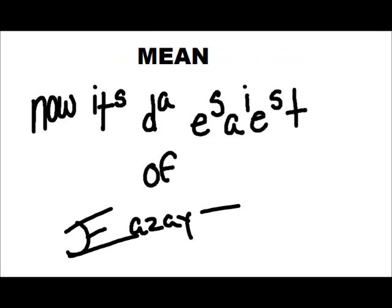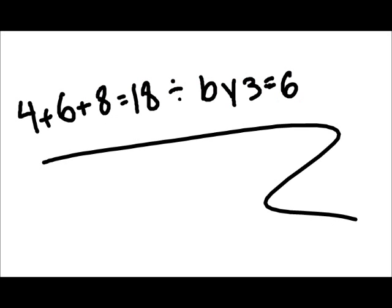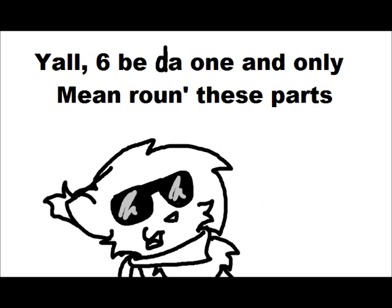Mean. Now, that's the easiest of easier. All you've got to do is find the average. Add up all your numbers and divide by your amount of numbers. 4 and 6 and 8 is 18, divided by 3 is 6. 6 is the mean.